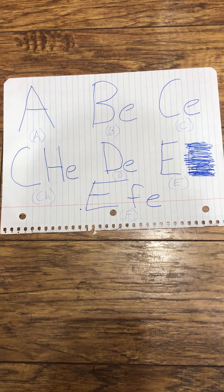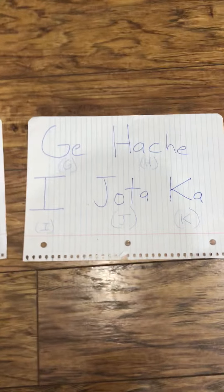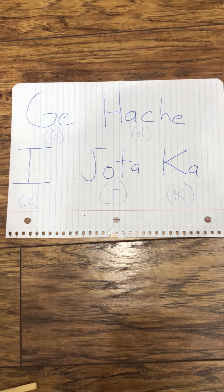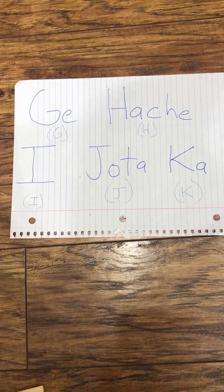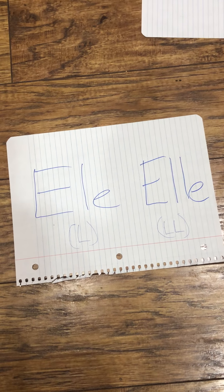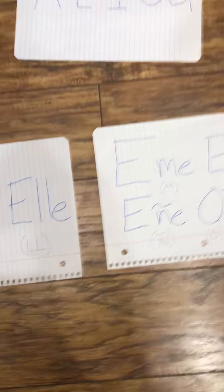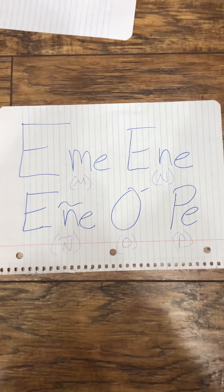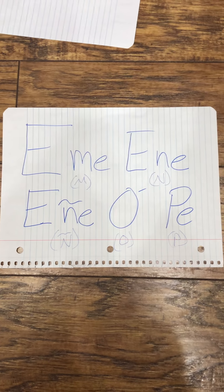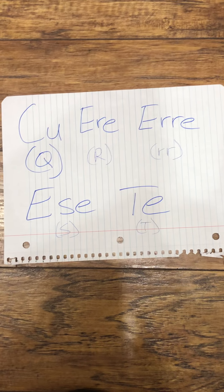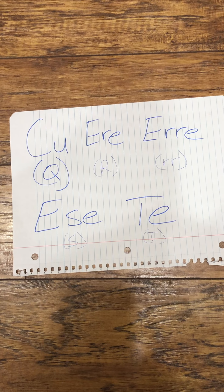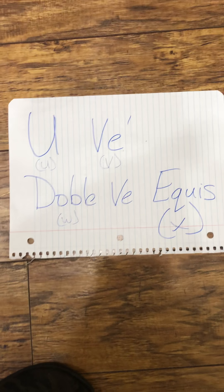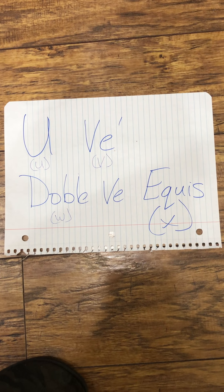We also have the Ñ — 'eñe.' For instance, the word 'baño,' which means bathroom. If we don't put the tilde over the N, we would pronounce it 'bano,' but it's 'baño.' So you have to know the difference between an N ('ena') and an Ñ ('eñe') with the tilde. We also have the double R, which is pronounced 'erre.' So we have 'ere' and 'erre.' 'Pero' means 'but,' and 'perro' with a double R means 'dog' — so it's very important to know the difference.